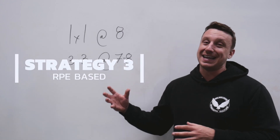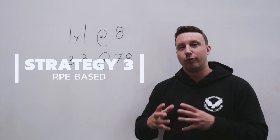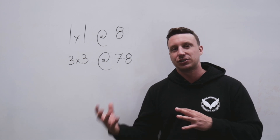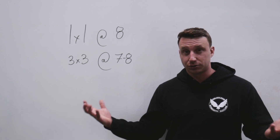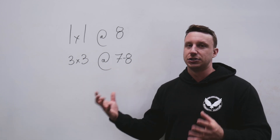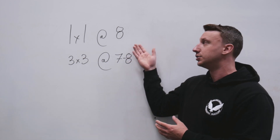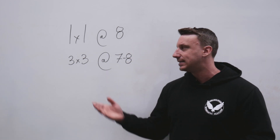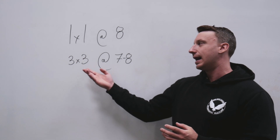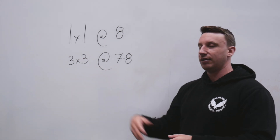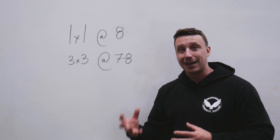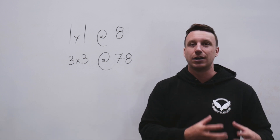The third strategy you may see for Top Set prescription would be a completely RPE-based strategy, and it's quite common. Once you've done RPE training for any length of time, it becomes quite intuitive. The Top Set here would simply be at an RPE 8, and then the back-offs would be within an RPE range — in this example, a 3x3 at RPE 7 to 8. With this strategy everything is regulated within the session based on current data, as RPE-based training allows you to do.